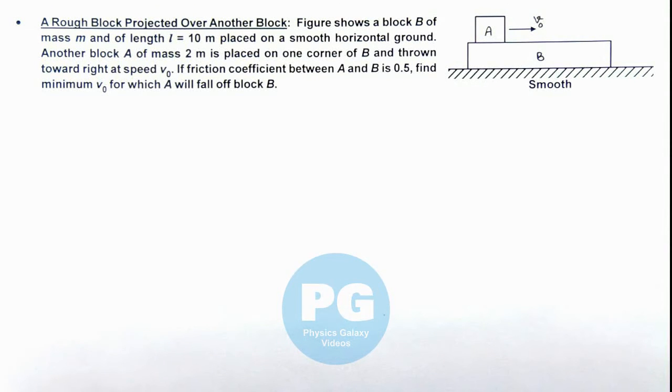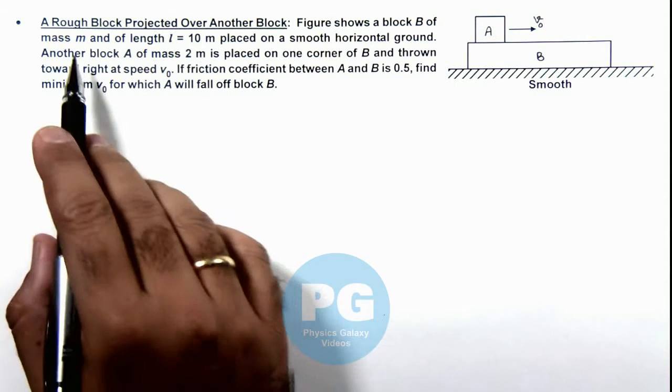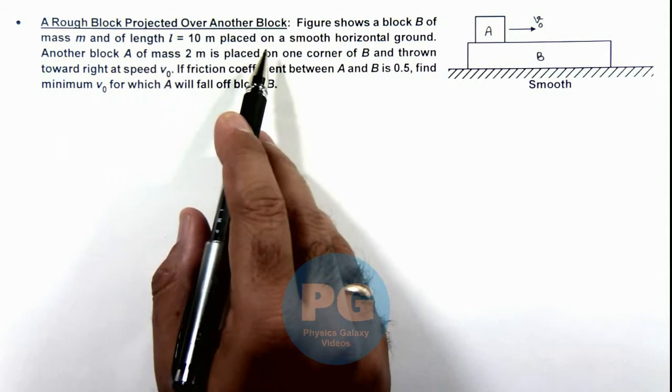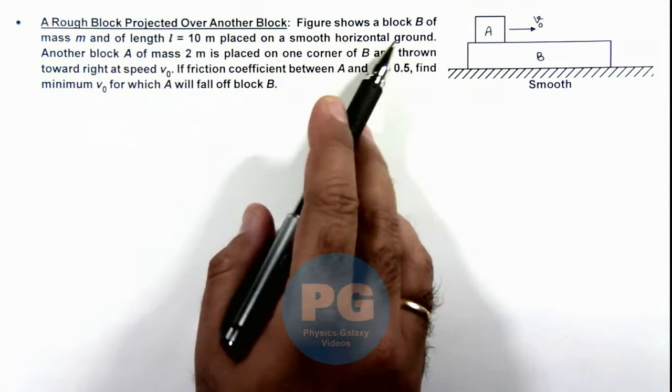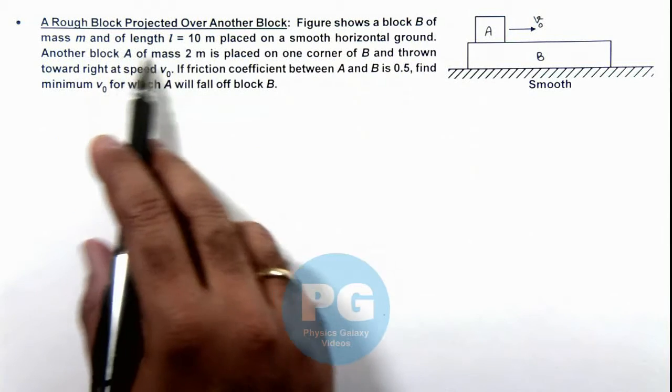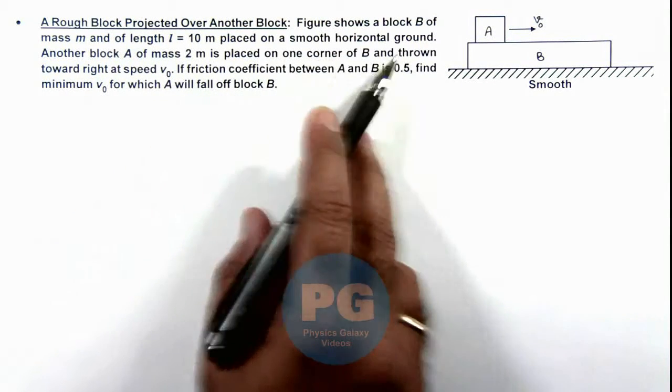In this illustration we'll discuss a situation when a rough block is projected over another block. Here the figure shows a block B of mass m and length L, placed on a smooth horizontal ground.